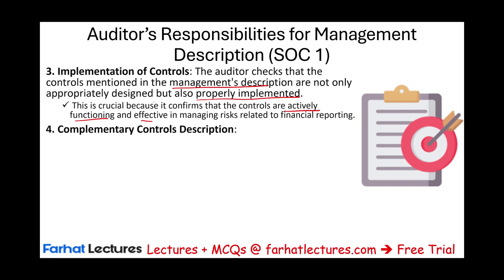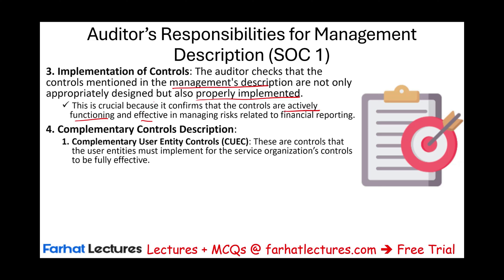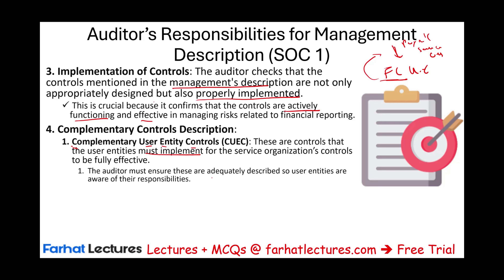If there are complementary user entity controls — CUECs — these are controls that the user entity must implement for the service organization's controls to work. For instance, the payroll company needs Farhad Lectures, the user entity, to provide proper employee names, social security numbers, and marital status to compute income taxes properly. The auditor must ensure these are adequately described so user entities are aware of their responsibilities.